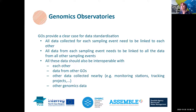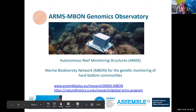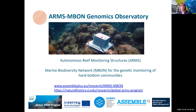Genomics observatories also usually collect abiotic parameters, photographs, and visual or field observations, and this data provides insight into the effects of climate change on biodiversity and ecosystems. They provide a clear case for data standardization: all data from each unique sampling event need to be linked together, and linked across all sampling events in the observatory — spread over time and space. All data should be interoperable with each other and ideally with data from other genomics observatories and monitoring stations.